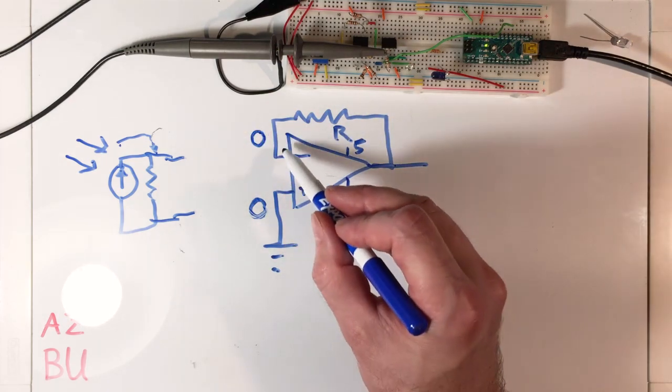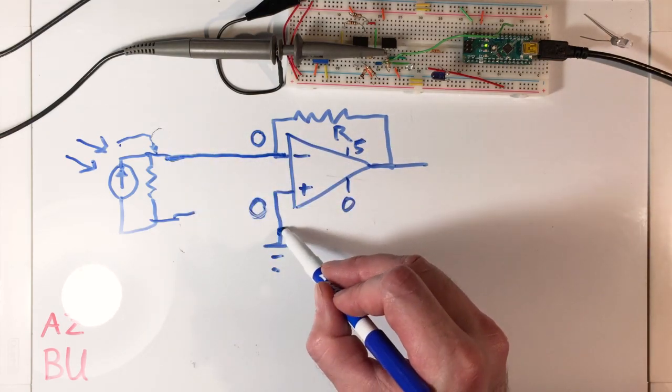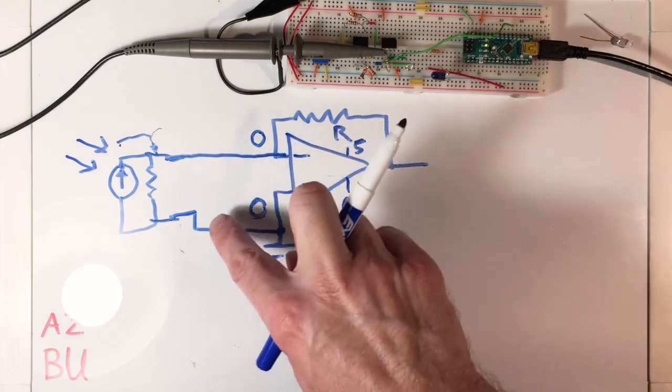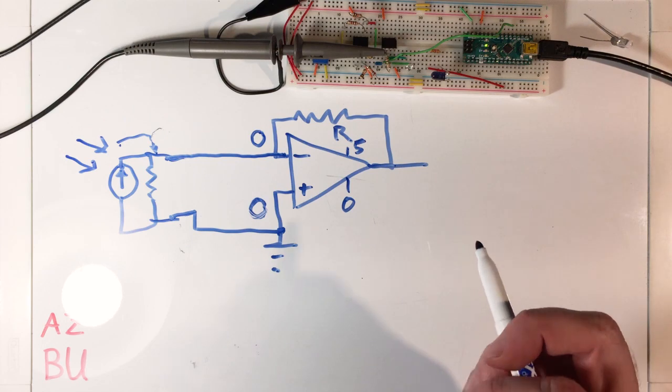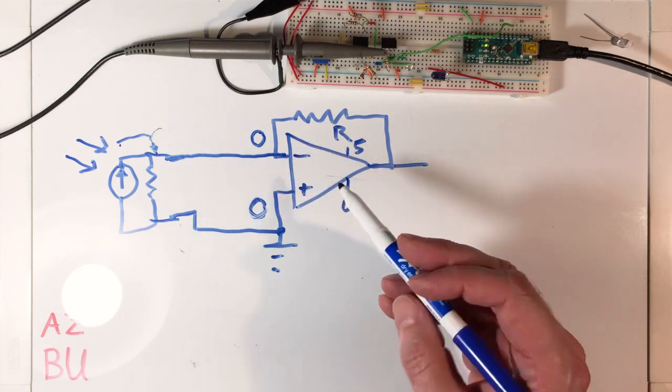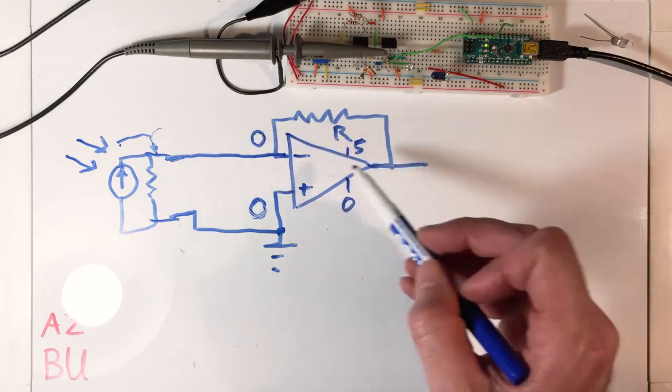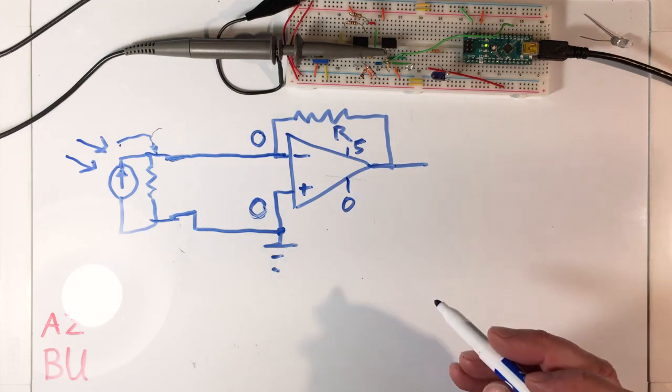If we connect our Norton source there, this connects to ground. You could see that we have zero volts across the two terminals. They call this a virtual ground—it's not an actual ground. There's no metal connection between these two wires, but it's a virtual ground because the op amp is going to do its best to maintain the voltage here at zero by changing the output.